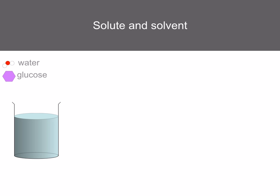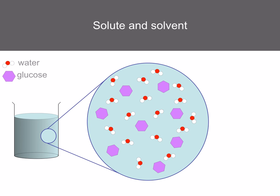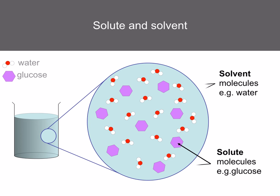What's the difference between solute and solvent? Here you've got a solution of glucose in water. If you zoom in, you can see the glucose in pink and the water represented by the red and white dots. The solute is the glucose — a solute is any substance, such as glucose, that's dissolved in a solvent, for example water. So the solute is represented by the pink and the solvent is represented by the red and white dots.